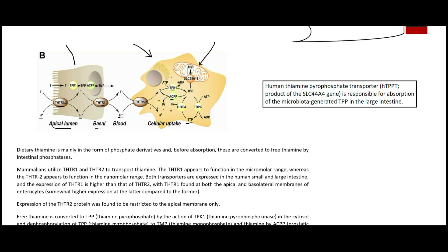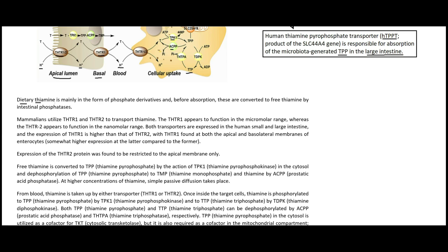In the small intestine we have THTR1 and THTR2, but I also found a paper describing another transporter called the human thiamine pyrophosphate transporter, or HTTPT, which is responsible for the absorption of microbiota-generated thiamine pyrophosphate in the large intestine. The bacteria in the large intestine generate and excrete thiamine pyrophosphate, and humans have this transporter to take it up.